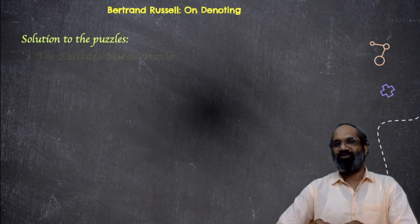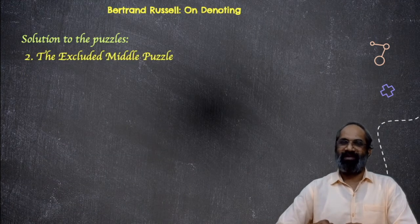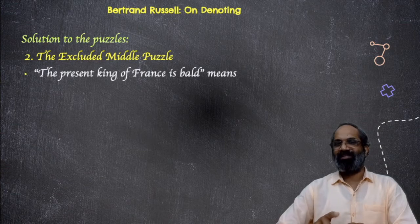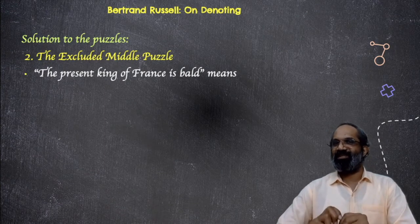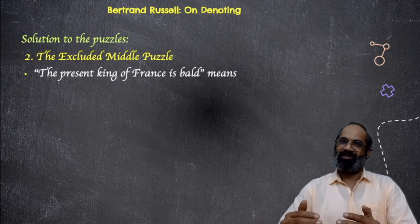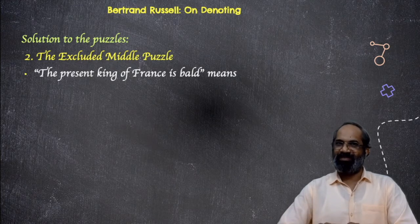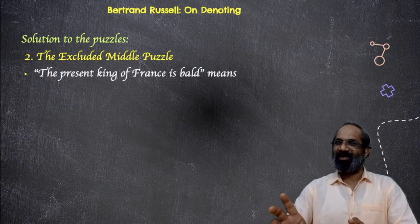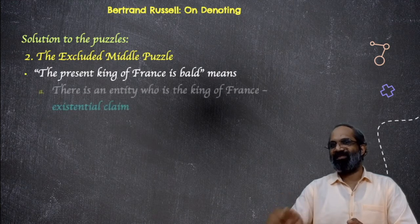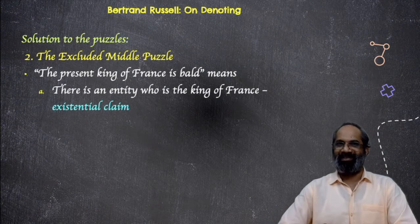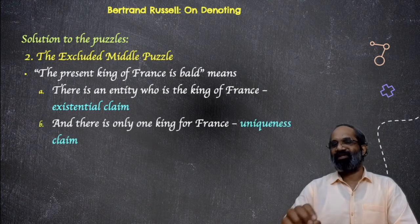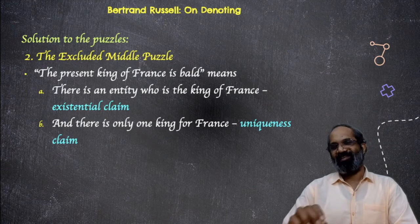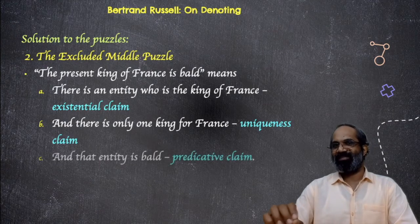Now coming to the breach of the law of excluded middle, we have taken the example: 'The present king of France is bald.' The definite description here is 'the present king of France.' As per Russell's theory, it must have three claims. One is the existential claim, and that must assert that there is a king of France. The second claim is the uniqueness claim, that is there is one and only one king of France. And the third one is the predicative claim, that that king is bald.